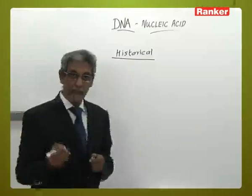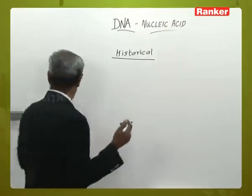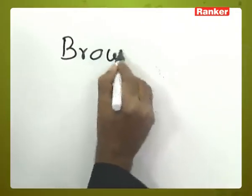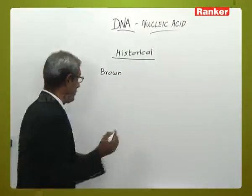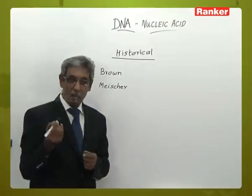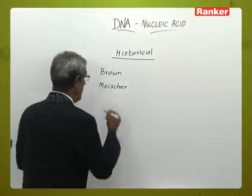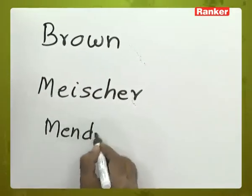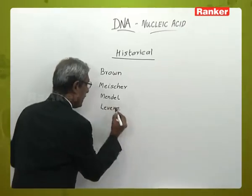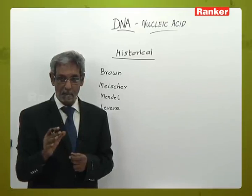Many names mentioned here are important for medical entrance exams. In the historical edifice: first, scientist Brown is associated with the discovery of the nucleus. Next, Miescher was a doctor who isolated nuclin from pus cells — he was the first person to discover nuclin or nucleoprotein. The pattern of inheritance was studied by Mendel. Levin postulated that adenine, guanine, cytosine, and thymine are the basic components of nucleic acid.